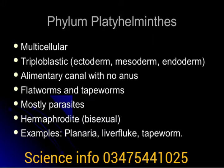Platyhelminthes are also known as flatworms. They are triploblastic acoelomates with three layers: endoderm, ectoderm, and mesoderm. They have bilateral symmetry and the body is unsegmented. They include Taenia solium (tapeworm), Fasciola hepatica (liver fluke), and Schistosoma (blood fluke). These cause diseases in humans.